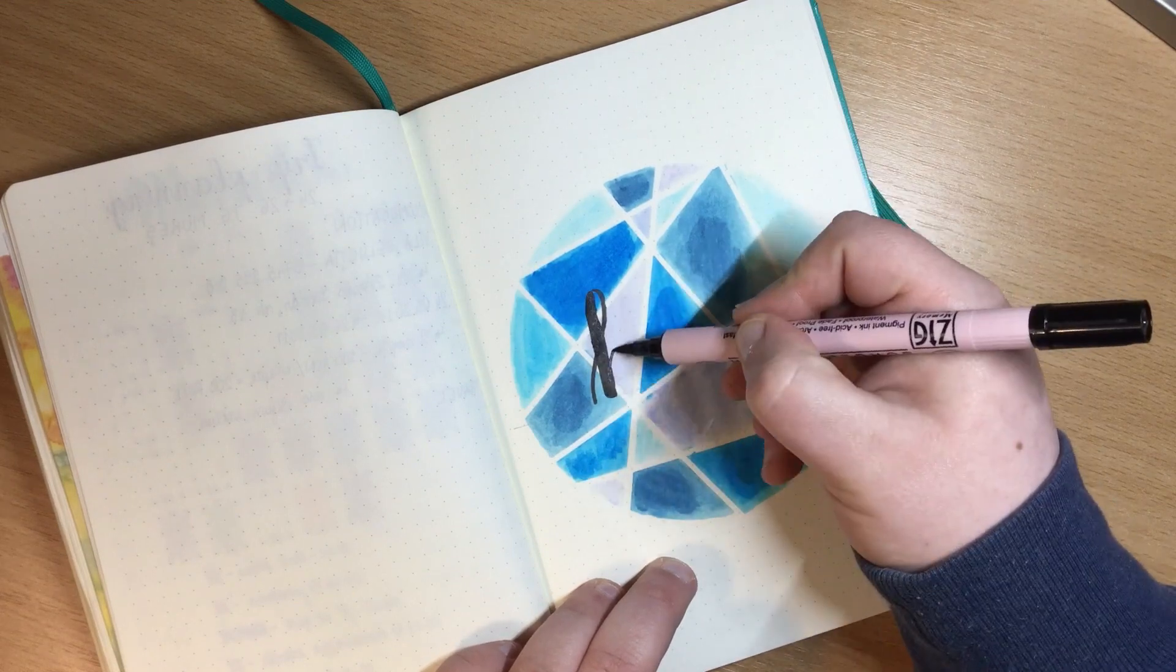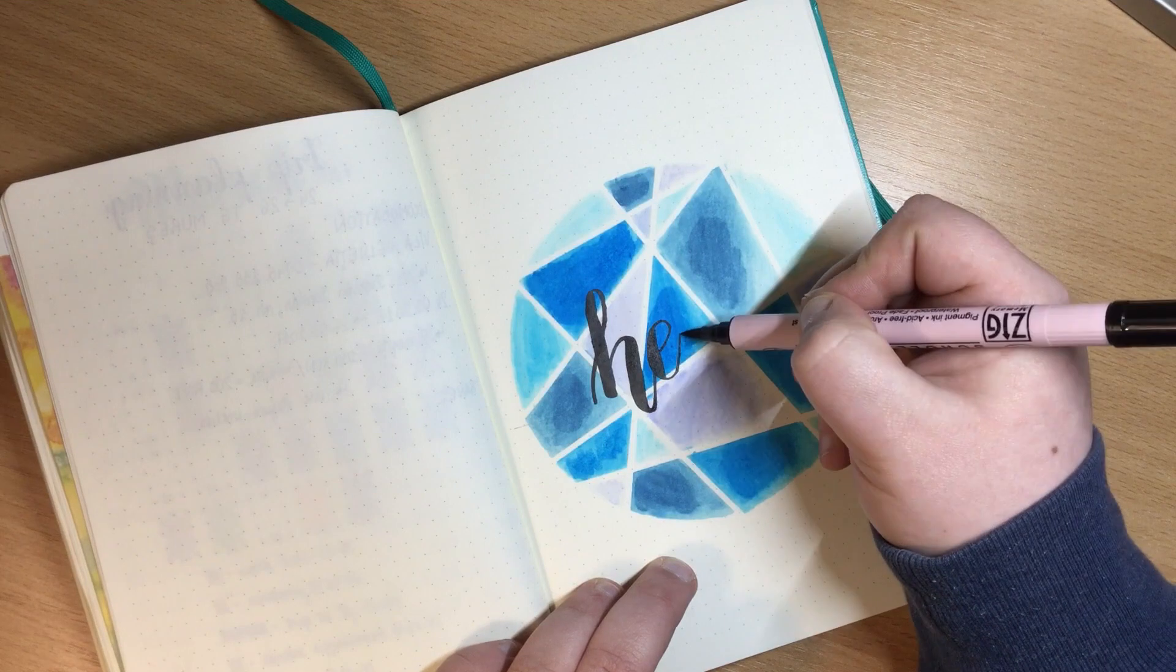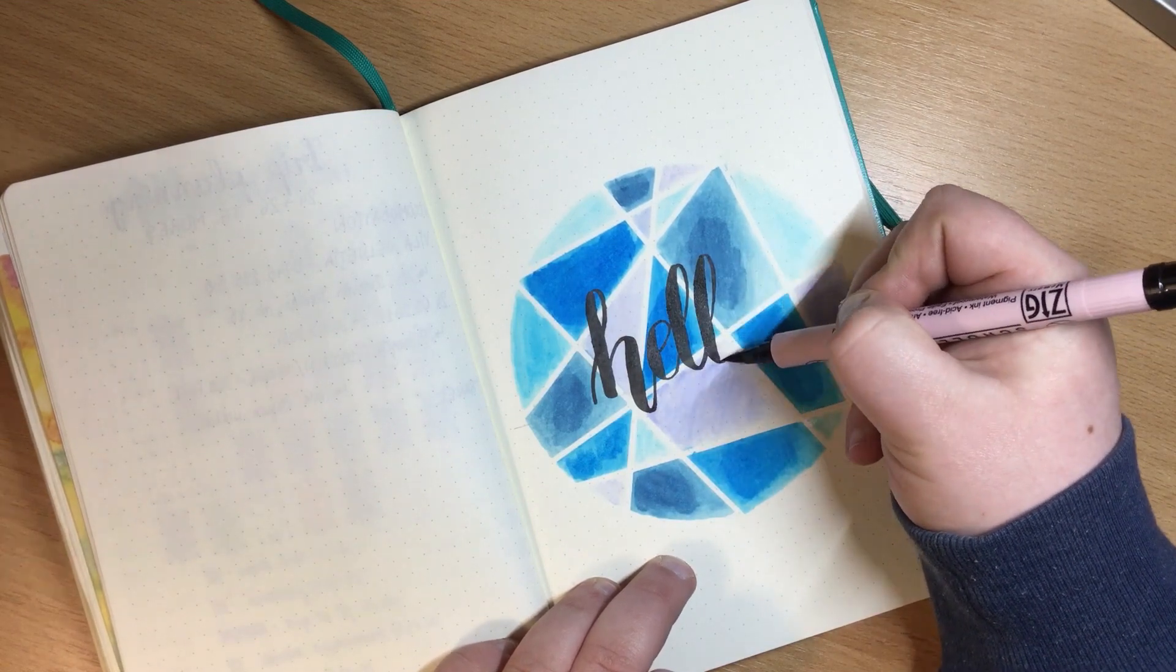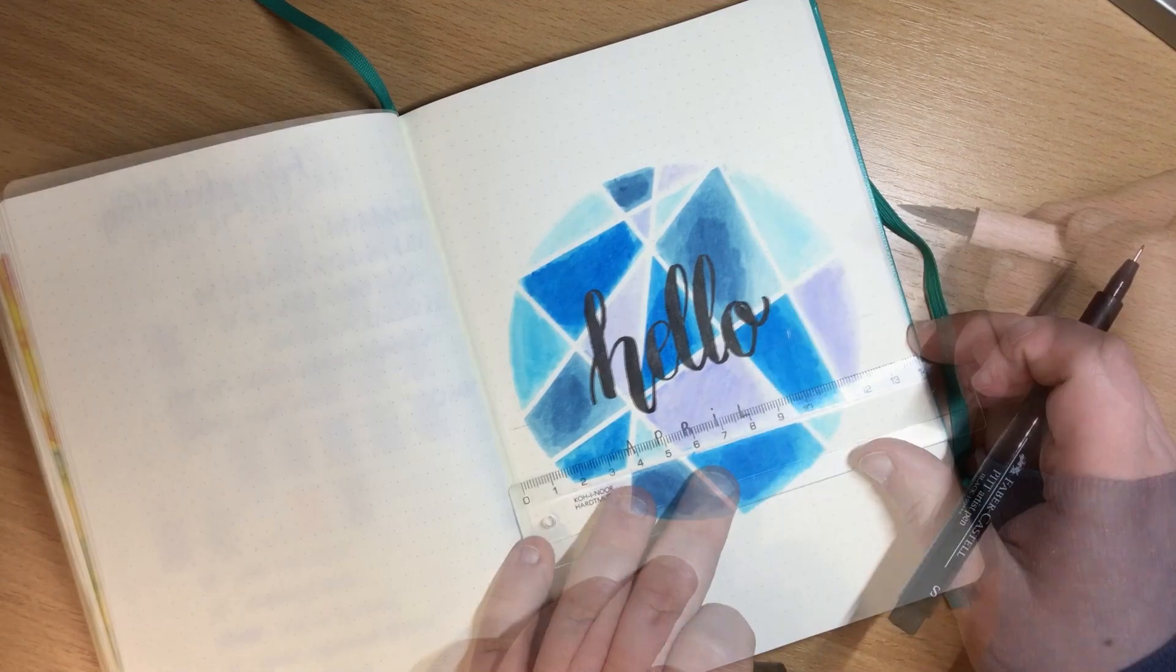Next I'm doing a bit of hand lettering using my zig scroll and brush pen in black and my Pitt artist pen. I've chosen this zig pen because it has pigment ink in it and it wouldn't mess with my background.